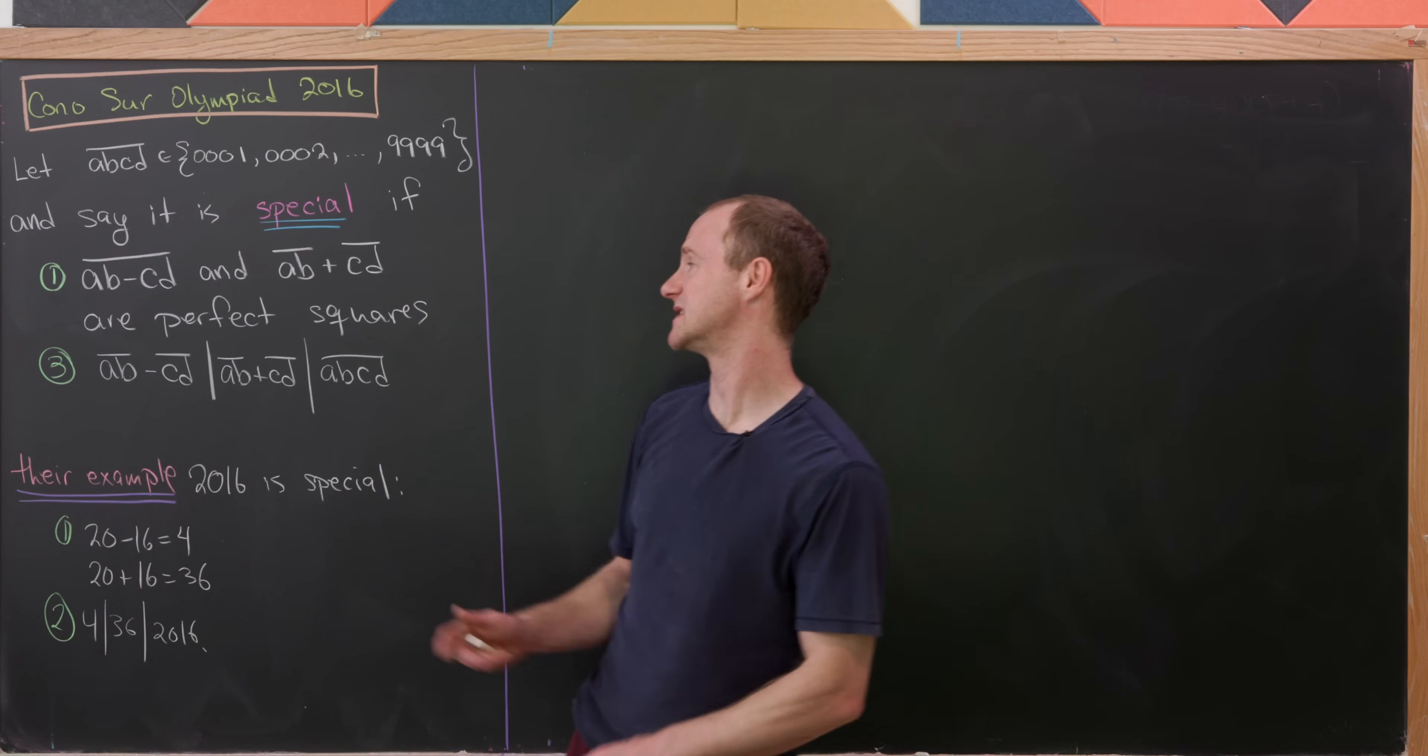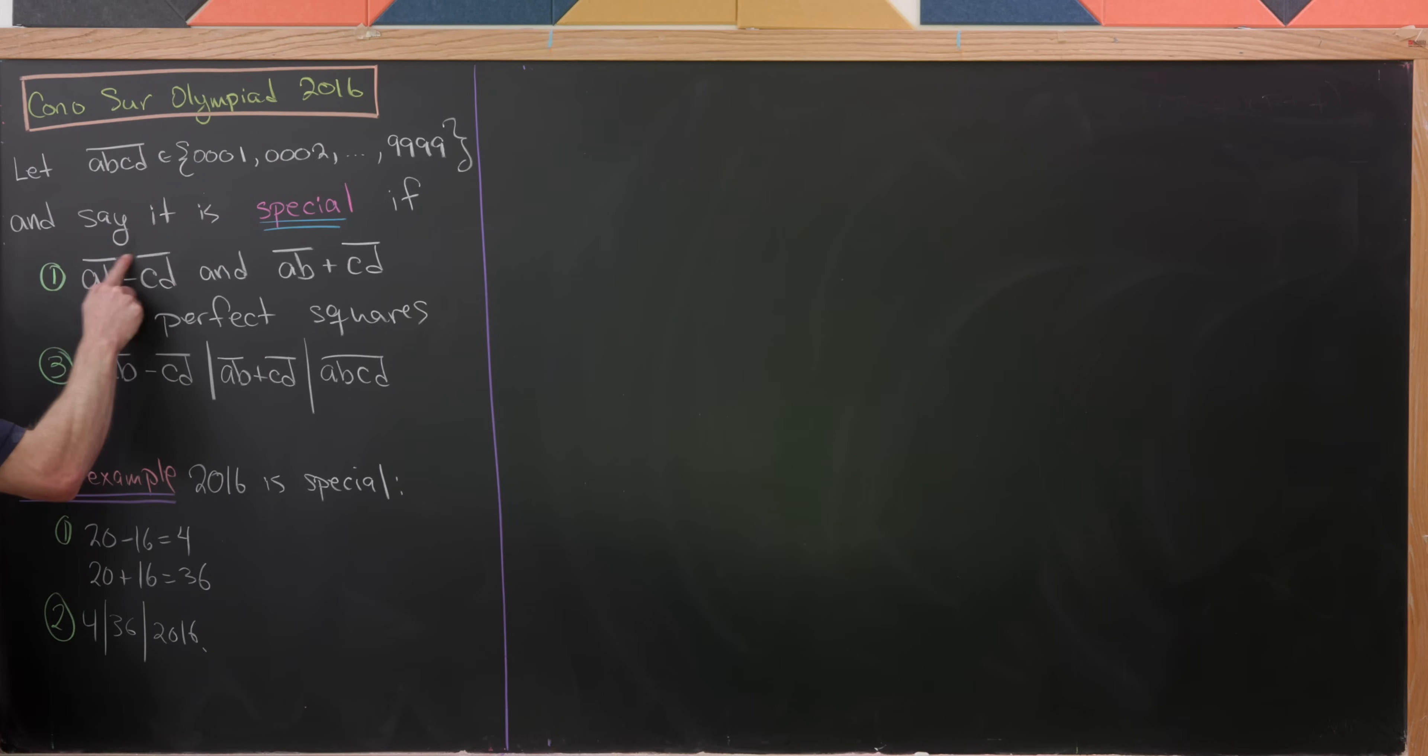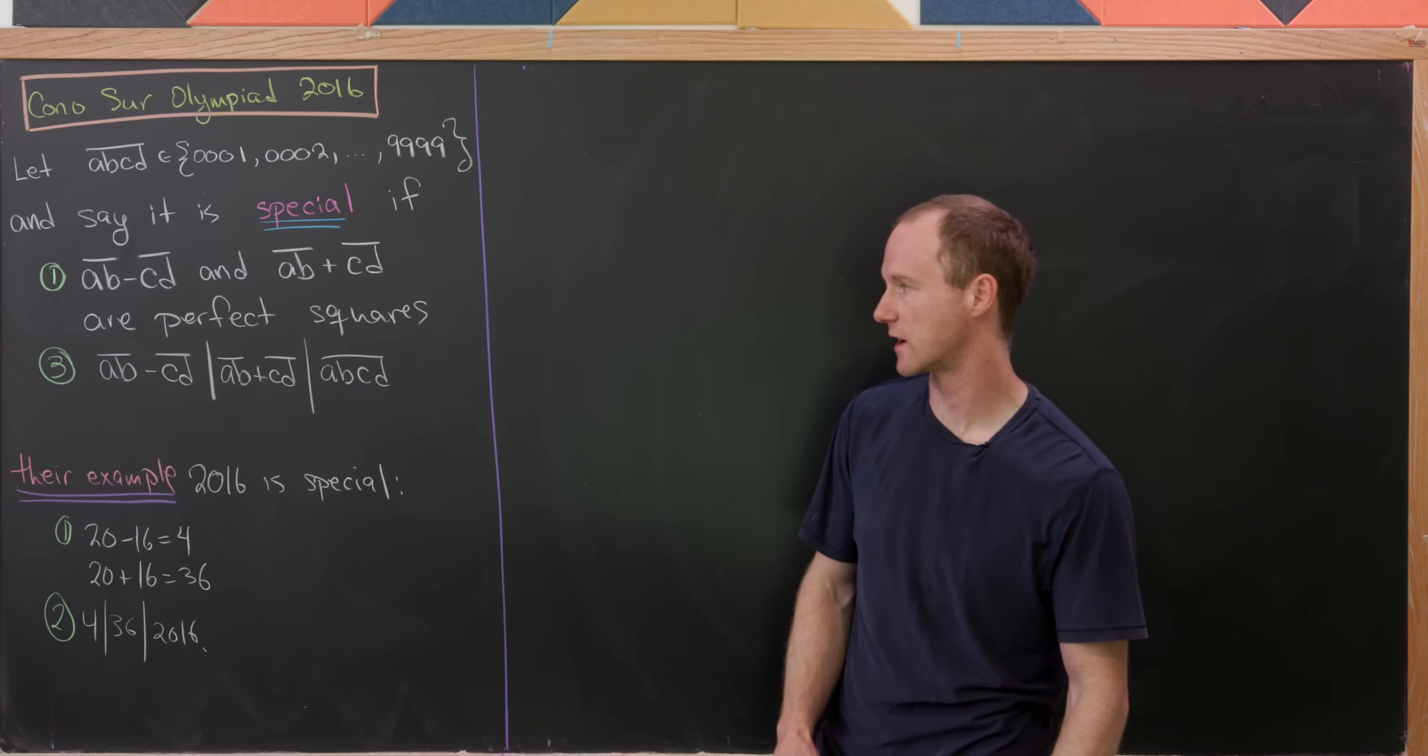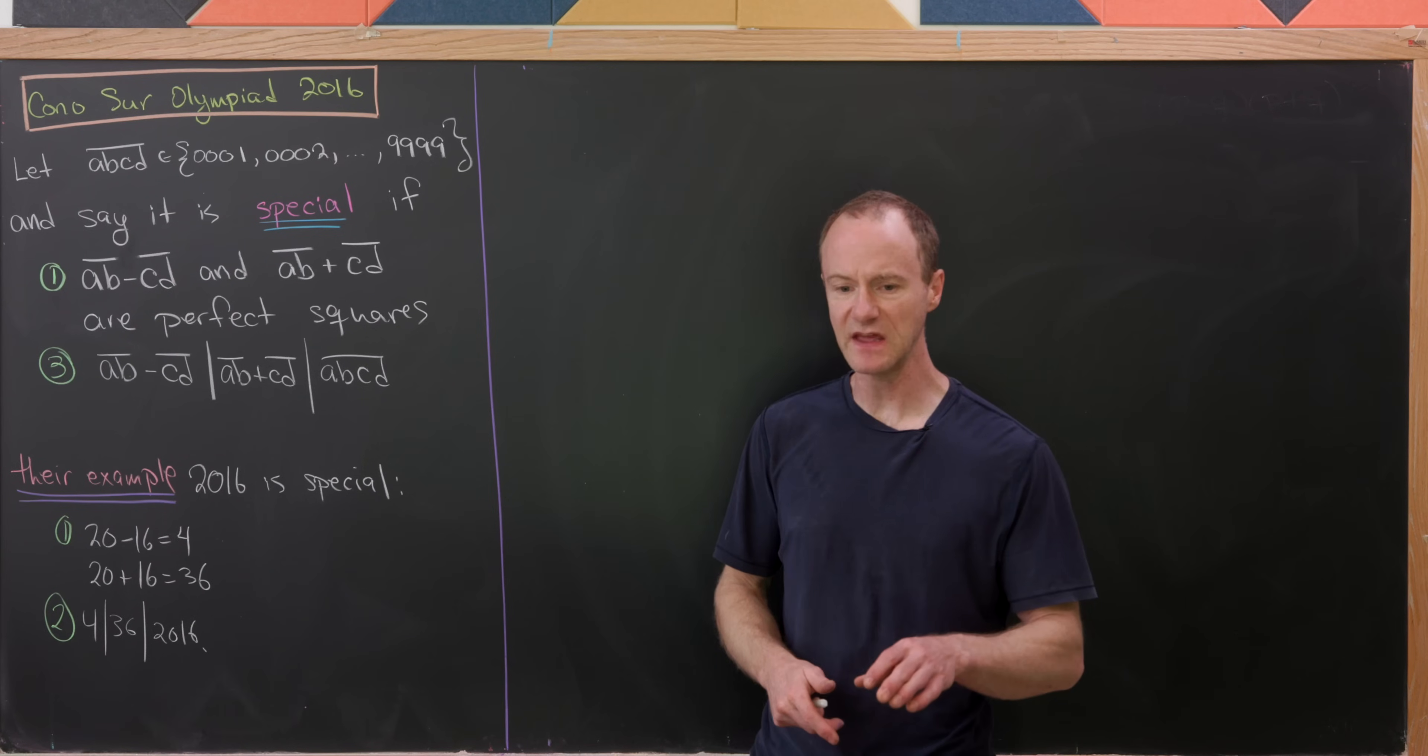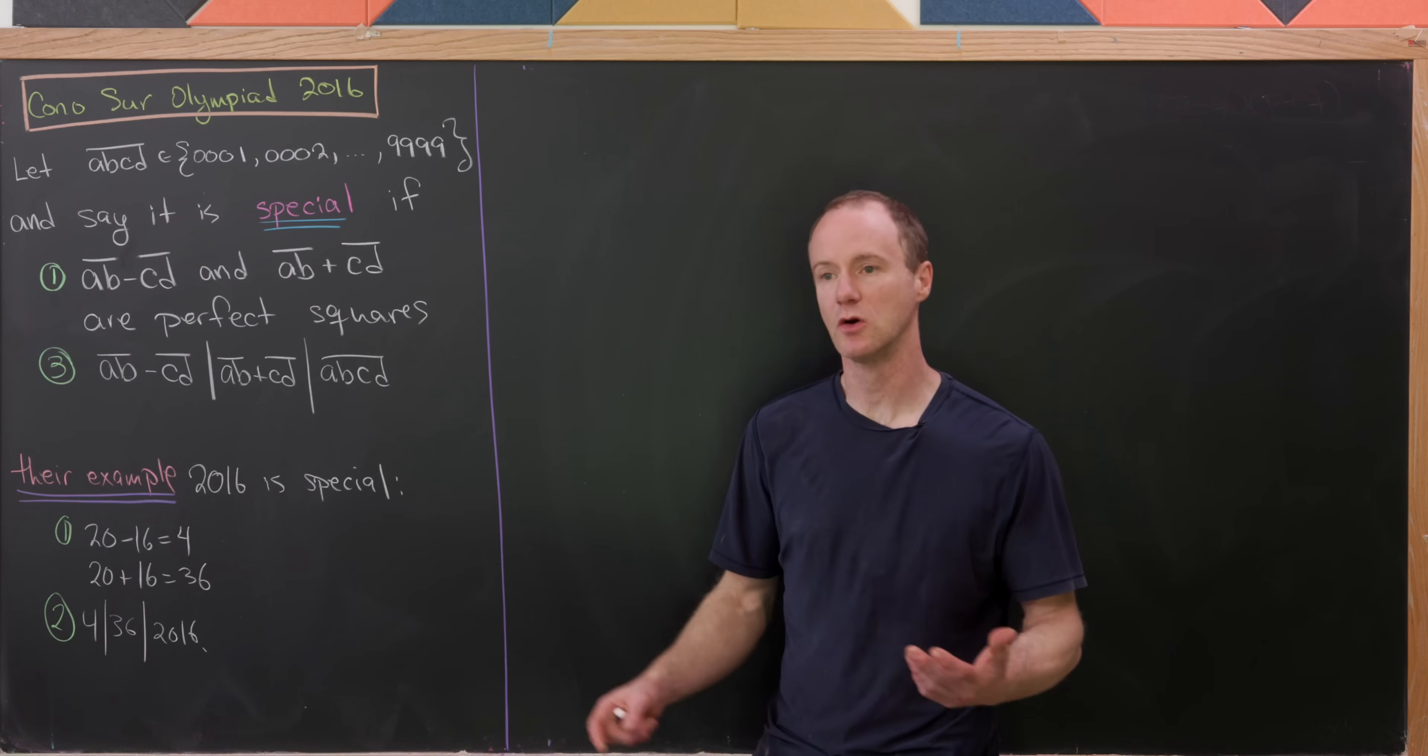We say that this number is special if it satisfies two compound conditions. Overline AB minus overline CD and overline AB plus overline CD are both perfect squares. Furthermore, the difference of the first two digits with the last two digits divides the sum, which divides the original number. The example given is 2016, likely built so that the year of the exam was a special number.